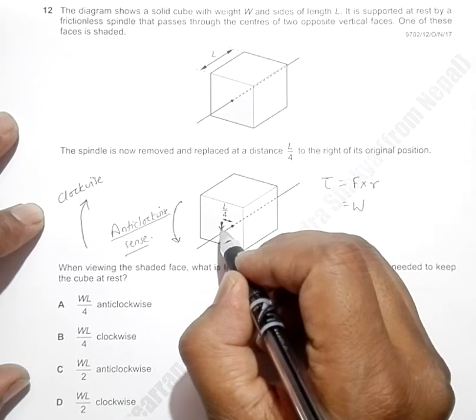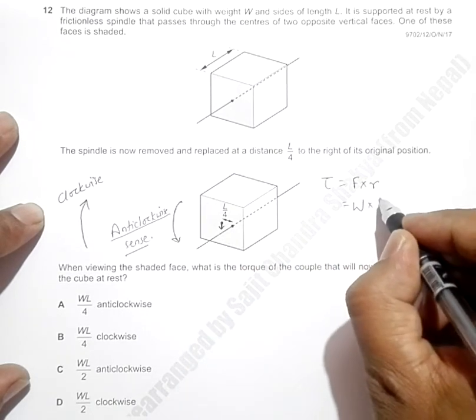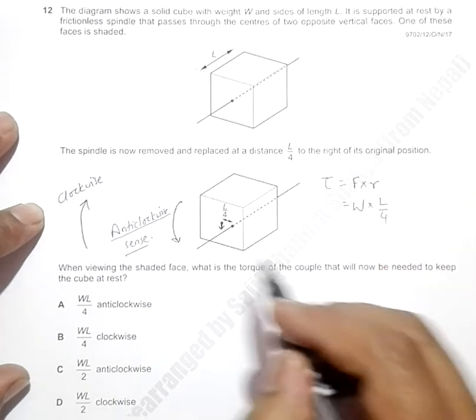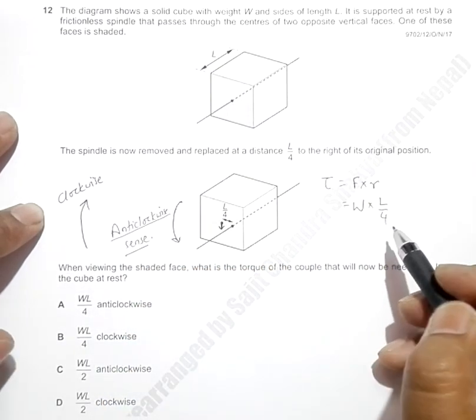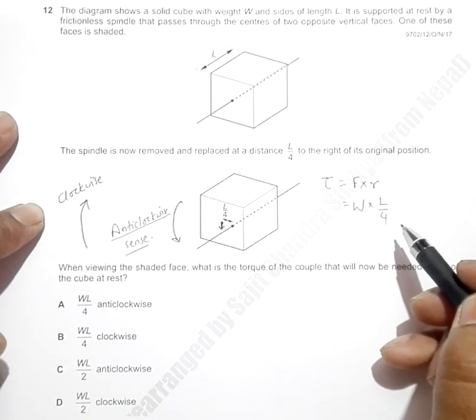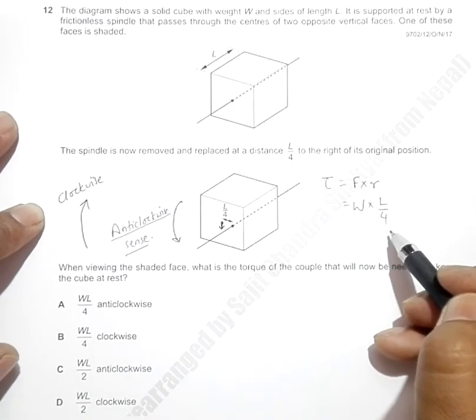cube, which acts along its center of gravity. The perpendicular distance is L/4, so the anti-clockwise torque is WL/4. If the cube is to be brought to rest,